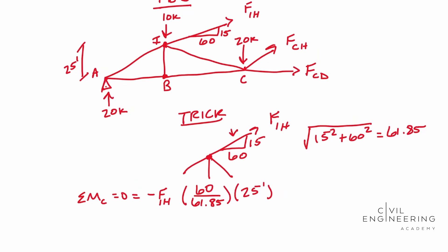This is going to be a minus FIH, and we're going to do 15 now, 15 over 61.85, and we're going to multiply that by 30 feet, because that's the perpendicular direction. So all we did was we found this and we found the perpendicular distance. And then it also does this, and we found the perpendicular distance, or it would really be up here, but you get the picture.